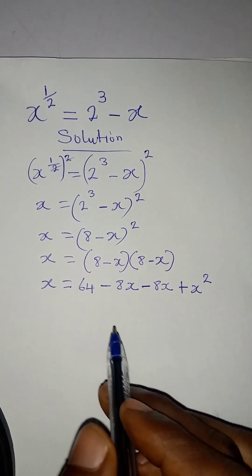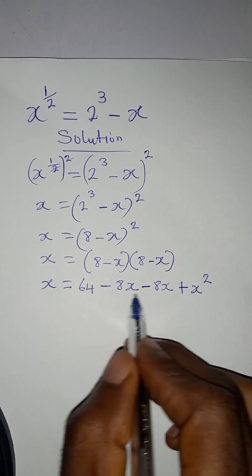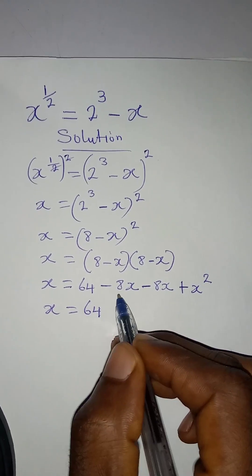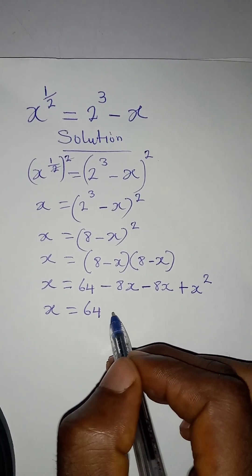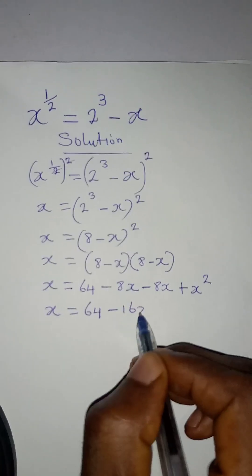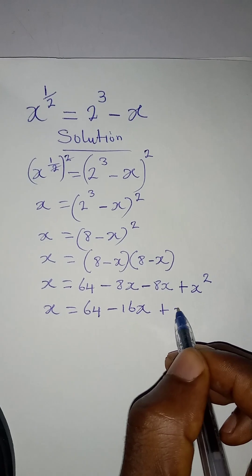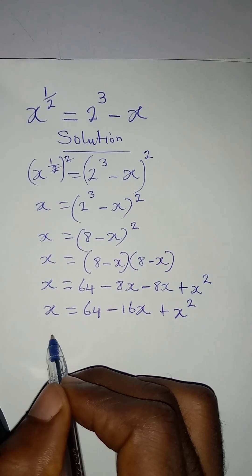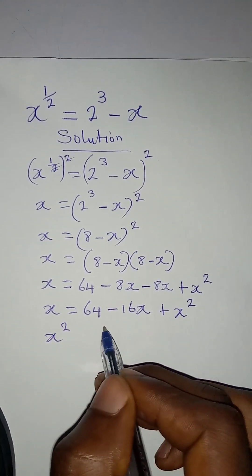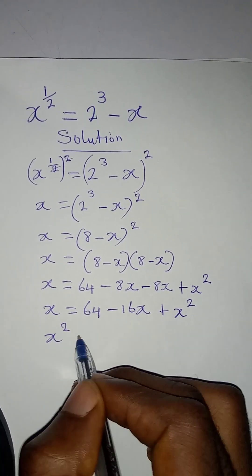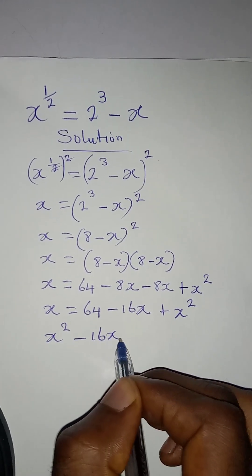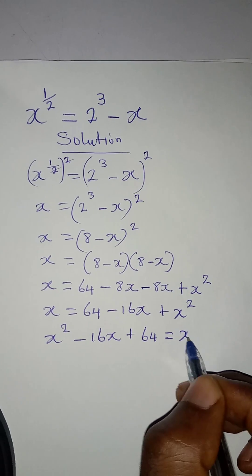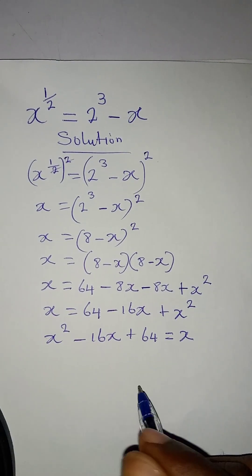Next, I'll work on the middle term. So x equals 64 minus 8x minus 8x, and minus 8x minus 8x is minus 16x, then plus x squared. I want to rearrange this, so I have x squared minus 16x plus 64 equals x.